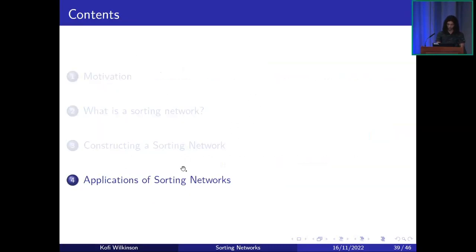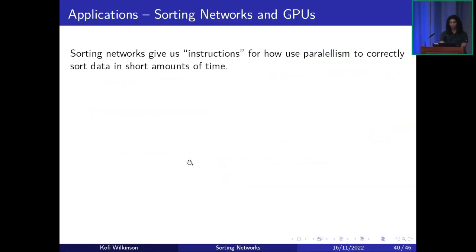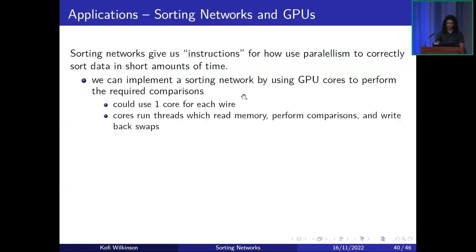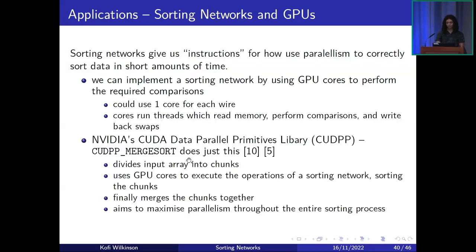Let's look at some potential applications of sorting networks and related research. One way to view sorting networks is as a set of instructions for using parallelism to correctly sort data quickly. We can implement a sorting network using GPU cores to perform the required comparisons — using one core per wire, where threads read memory, perform comparisons, and write back any swaps. NVIDIA has a library called the CUDA Data Parallel Primitives Library (CUDPP), and in it there's a function called CUDPP merge sort that does exactly this: it divides the array into chunks, uses GPU cores to execute the operations of a sorting network to sort those chunks, and then merges the sorted chunks to give the final sorted output, maximizing parallelism throughout.